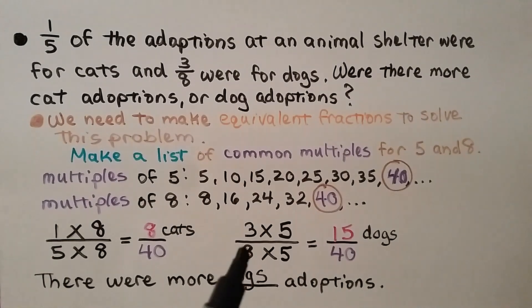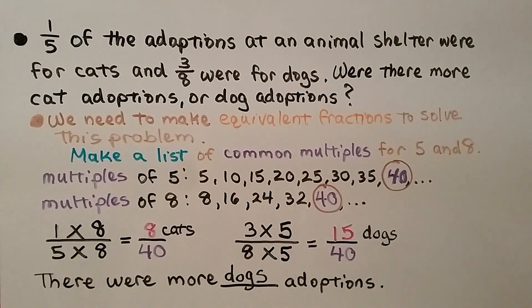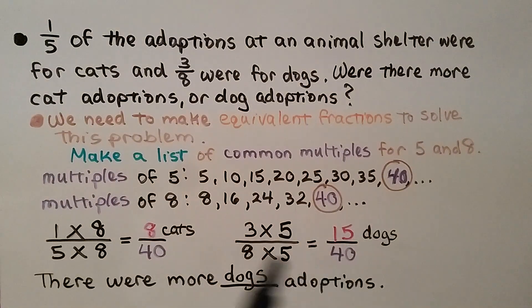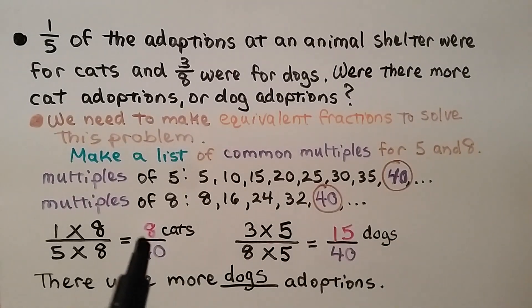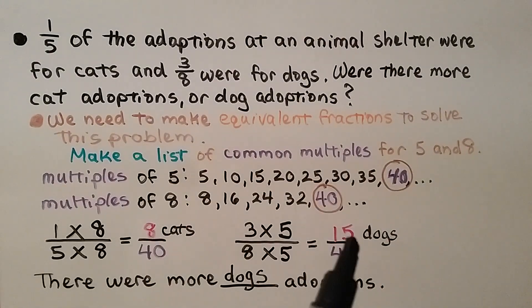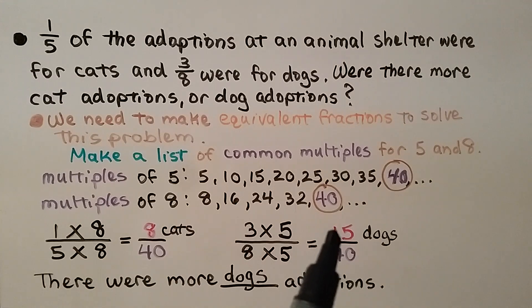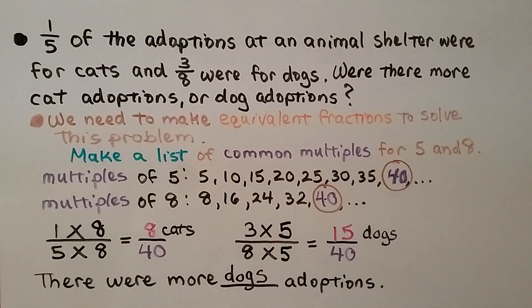Three-eighths is more than one-fifth. We found a common denominator by using common multiples, and by looking at the numerators, we saw there were more dogs.